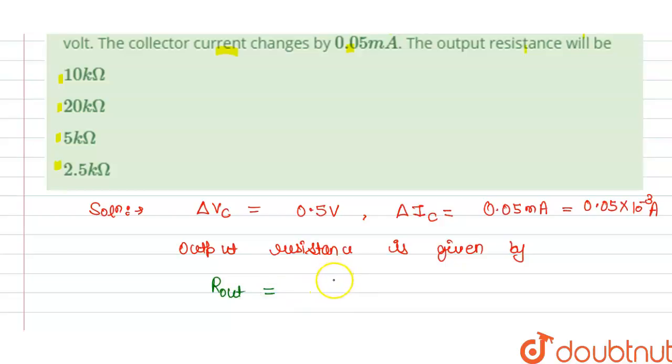R output is delta change in collector voltage divided by change in collector current. That is 0.5 divided by 0.05 into 10 power minus 3. So we get this is equal to 10 power 5 ohm.